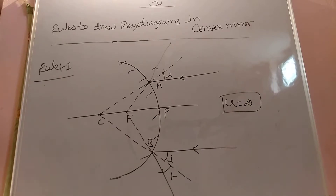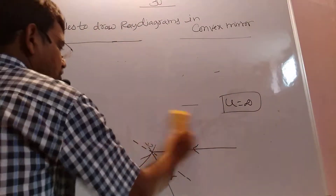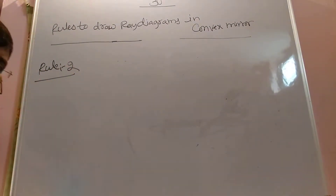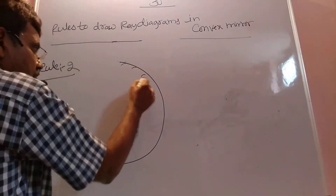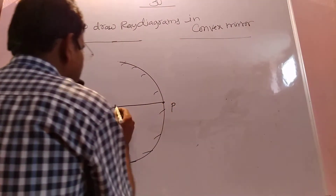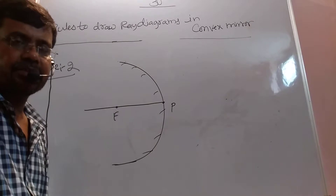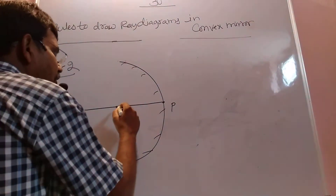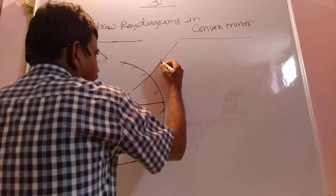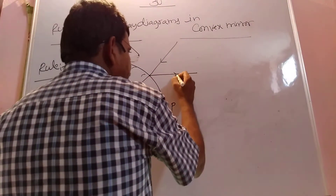Now we are going to Rule 2. In Rule 2, if this is a convex mirror — this is the pole, this is the focus — if any beam of light is moving towards the focal point, a parallel reflected beam is created after reflection. That is Rule 2.